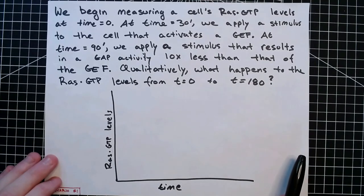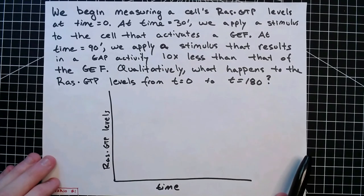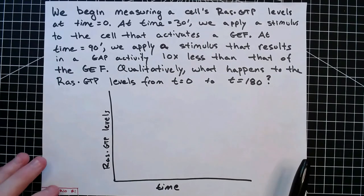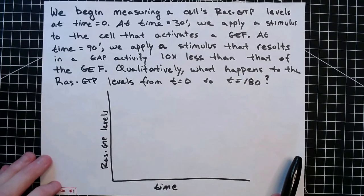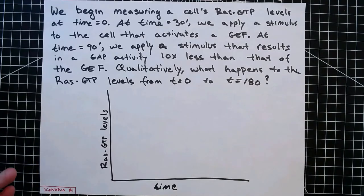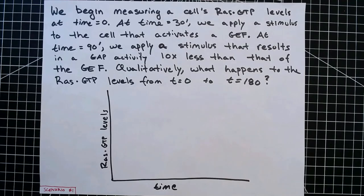That GAP activity is 10 times less than that of the GEF. Qualitatively, what do we think is going to happen to the RAS-GTP levels from T equals zero to T equals 180 minutes if we're using this assay? If you're following along, I'd suggest pausing the video for a second and thinking about what we're asking here to see if you can come up with the answer.